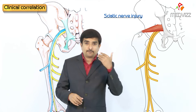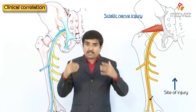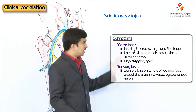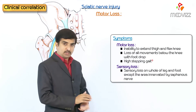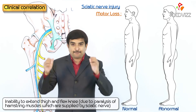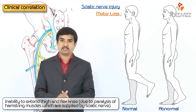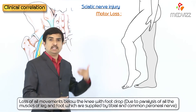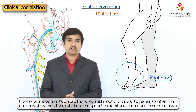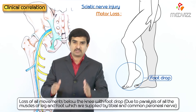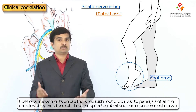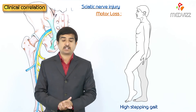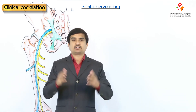Since the site of injury is before the sciatic nerve divides into its two terminal branches, both the tibial and common peroneal nerves are affected. Motor loss includes: inability to extend the thigh and flex the knee due to paralysis of the hamstring muscles, loss of movements below the knee, foot drop due to paralysis of all muscles of the leg and foot, and a high stepping gait.